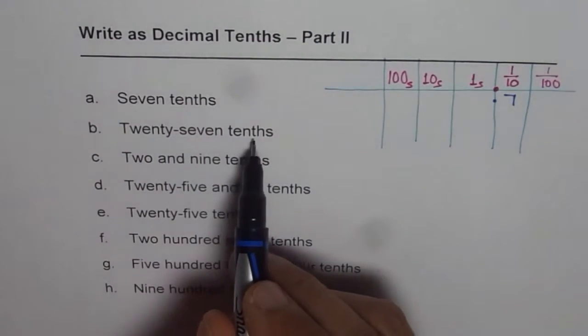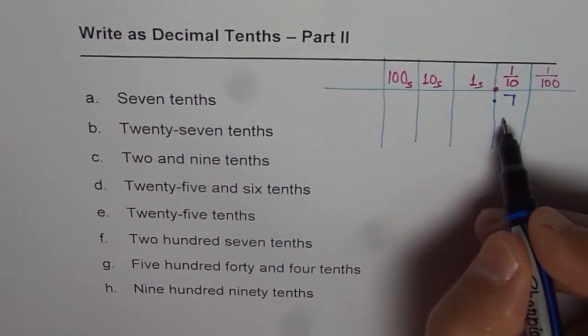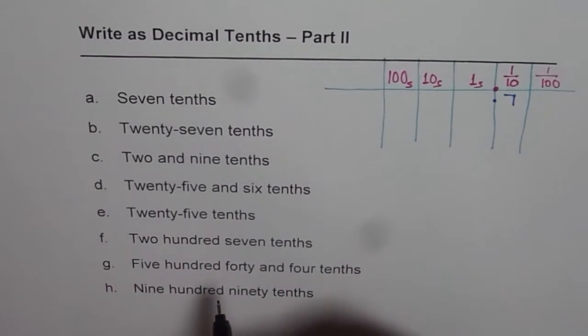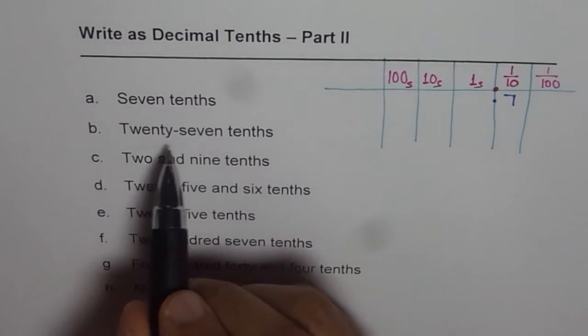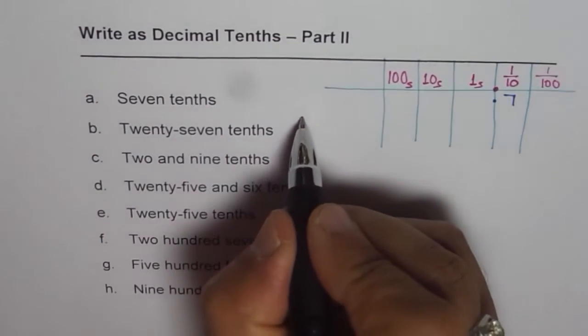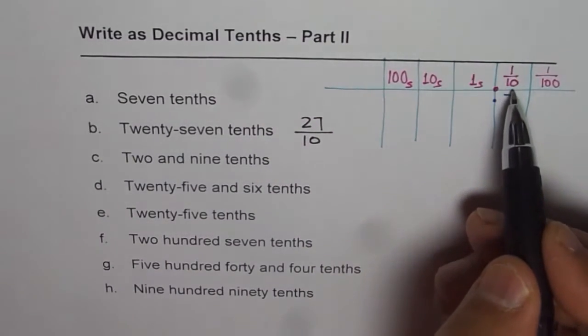Twenty-seven tenths. Now that is kind of tricky. In this place I have to put 27, but I can place only one number. What happens to two? That is what we should think about. Let's look into it once again. Twenty-seven tenths, what does it mean? It means 27 over 10.